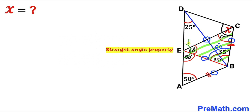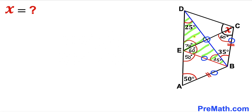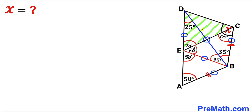Recalling the straight angle property, this straight angle is 180 degrees. If this angle is 50 degrees and this angle is 60 degrees, then this angle must be 70 degrees. Now focusing on triangle BED, this angle is 25 degrees and this angle is 25 degrees as well, so this is an isosceles triangle, meaning these two side lengths are congruent.